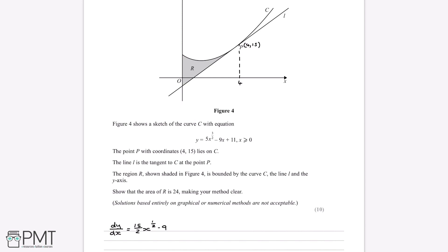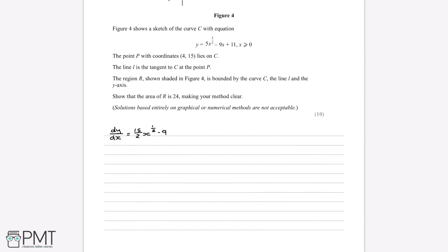To find the gradient at the point P, we substitute x equals 4 into dy/dx: the gradient is 15 over 2 multiplied by 4 to the power of 1/2 minus 9. Putting this into the calculator, we find that the gradient is 6.